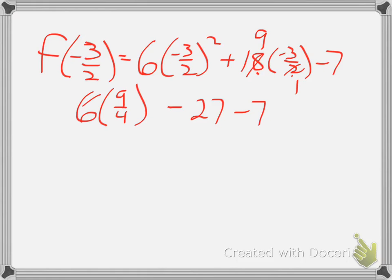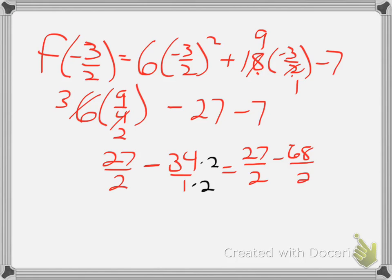I can also reduce 6 and 4, each by 2, and I'll get 3 and 2, so now 3 times 9 gives me 27 over 2. 27 minus 7 gives me a minus 34. Now, fractions are okay to have as y values, but we need to get a common denominator. Currently it's 1, so my common denominator would be 2, so I multiply my second fraction by 2, and I'll have 27 halves minus 68 halves.